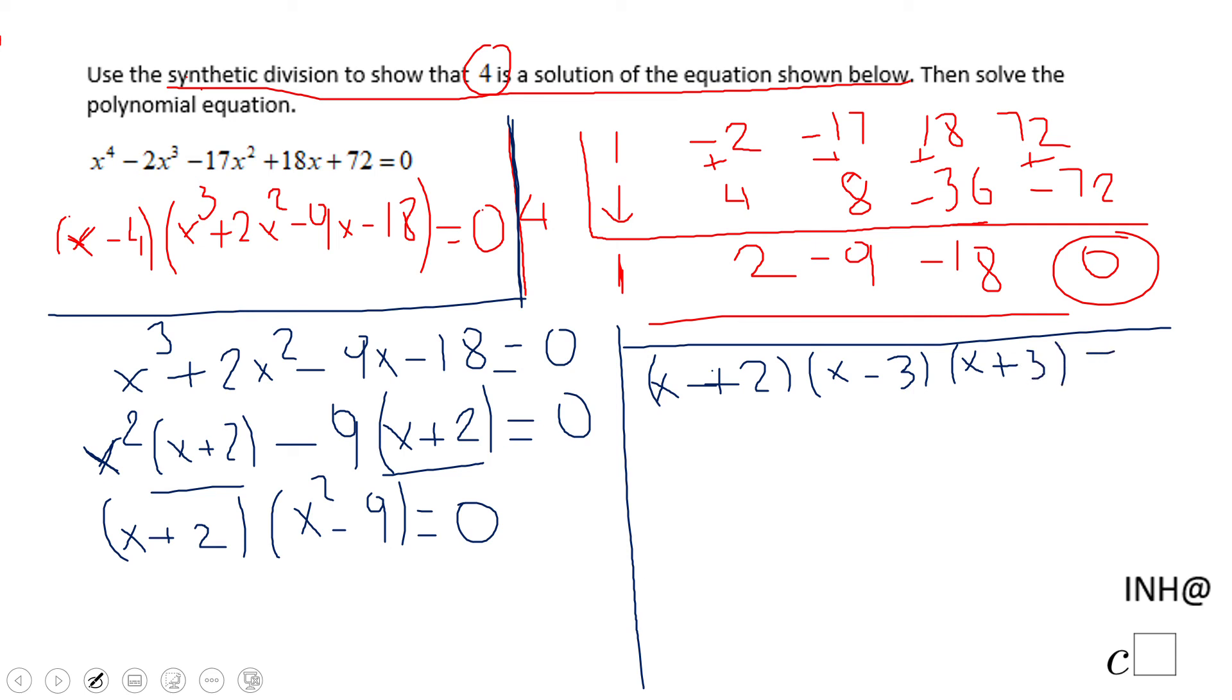Now we use the zero product property. We have x + 2 equals 0, which gives us x equals negative 2. One solution of this third degree polynomial, which is also a solution for the 4th degree polynomial we started with.